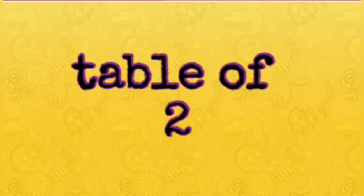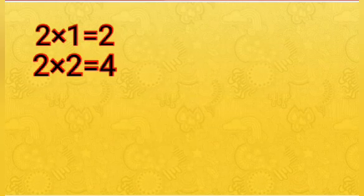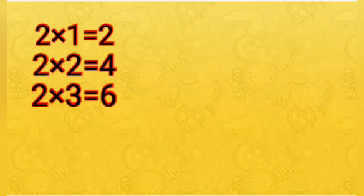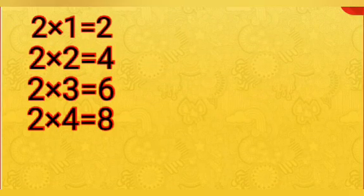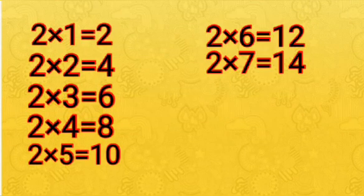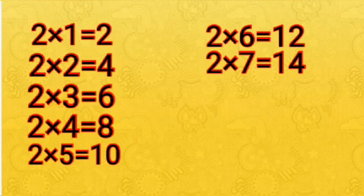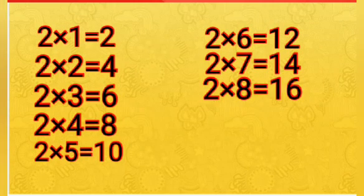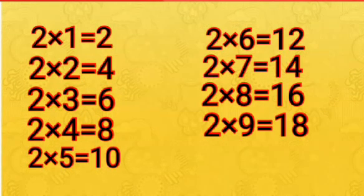Table of 2. 2 ones are 2, 2 twos are 4, 2 threes are 6, 2 fours are 8, 2 fives are 10, 2 sixes are 12, 2 sevens are 14, 2 eights are 16, 2 nines are 18.